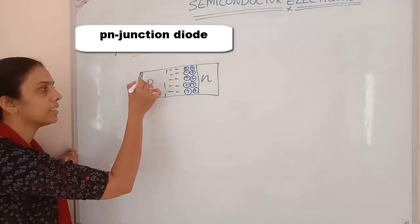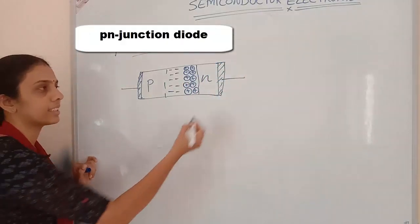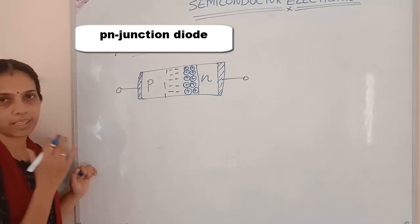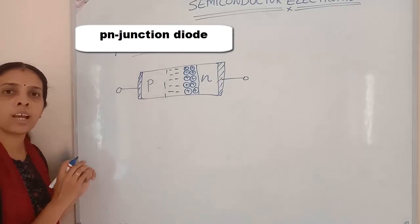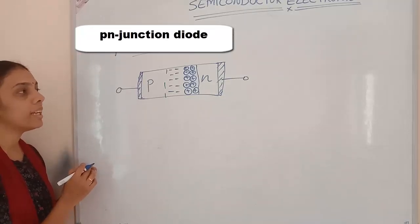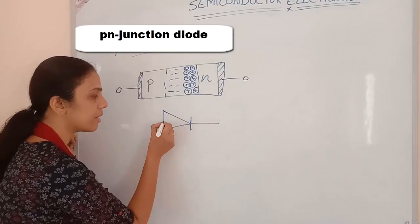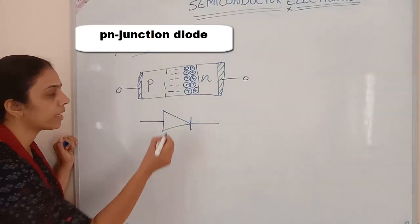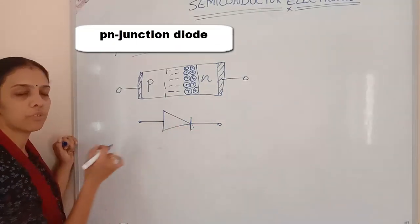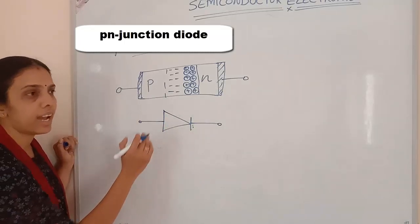By connecting metallic conductors on both sides we get a PN junction diode. In electronic circuits we use symbols — for example, a cell has positive and negative terminals drawn within a circle. For a PN junction diode we use a specific symbol: the triangular part shows the P side and the line shows the N side.